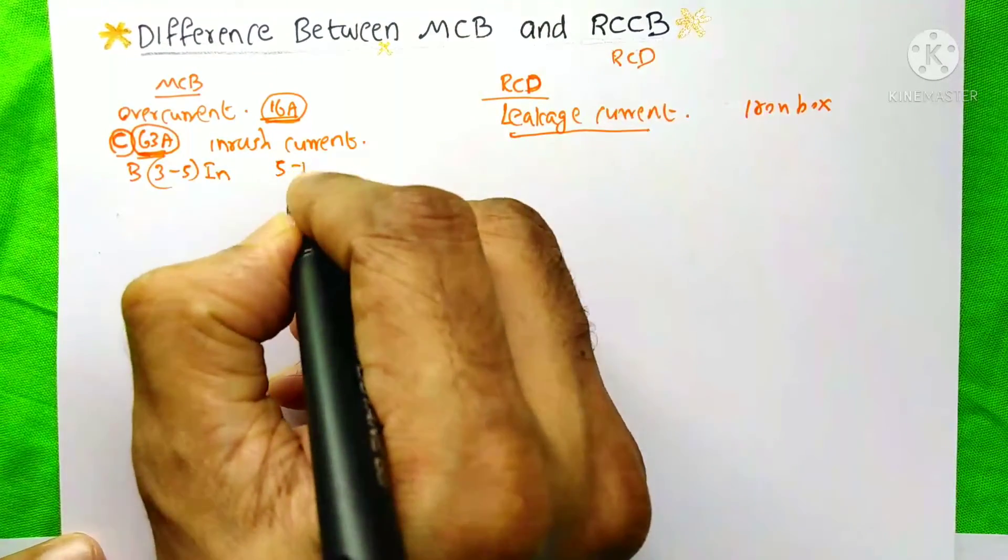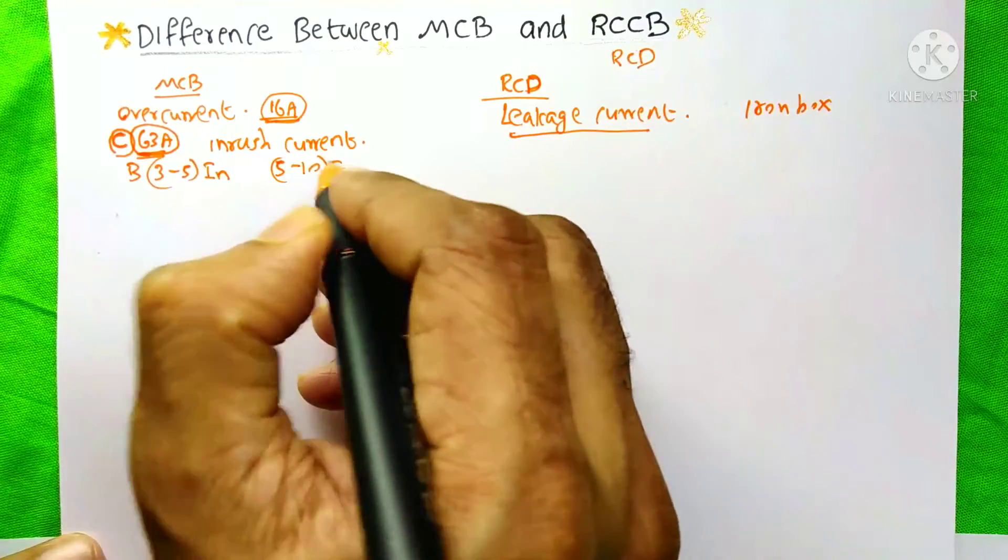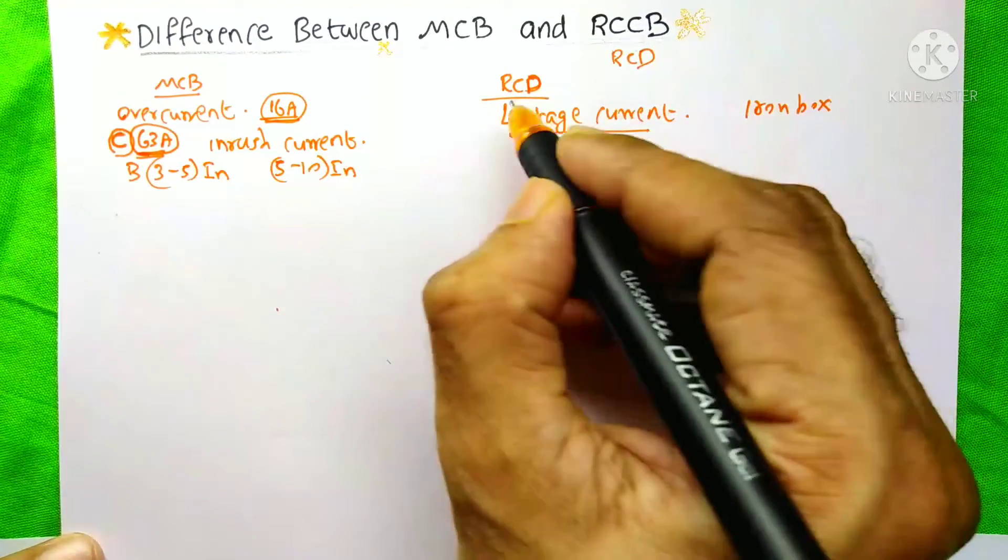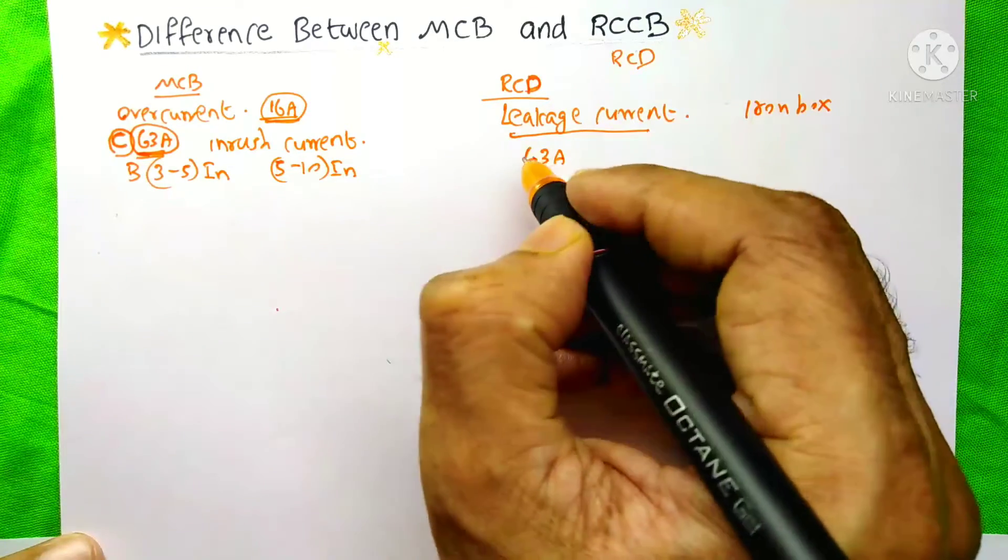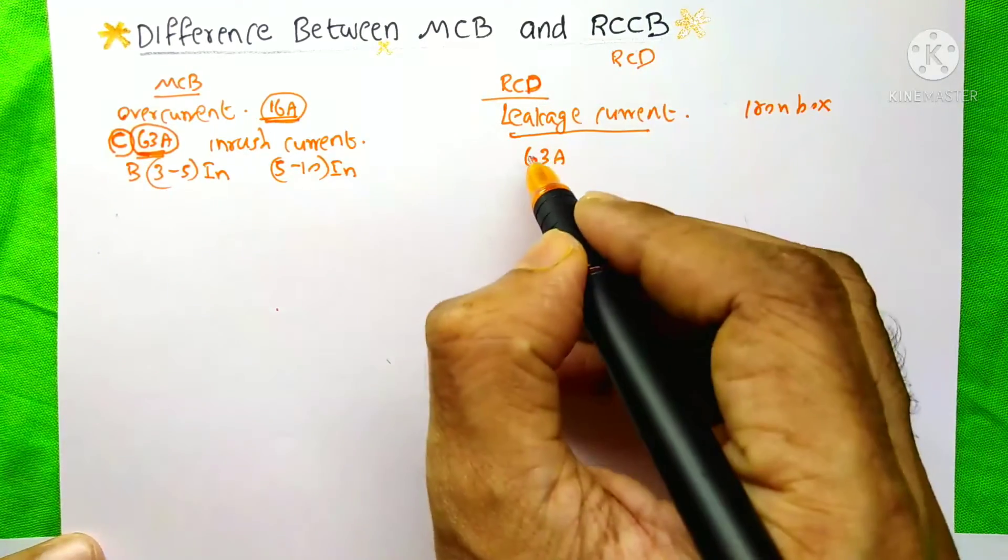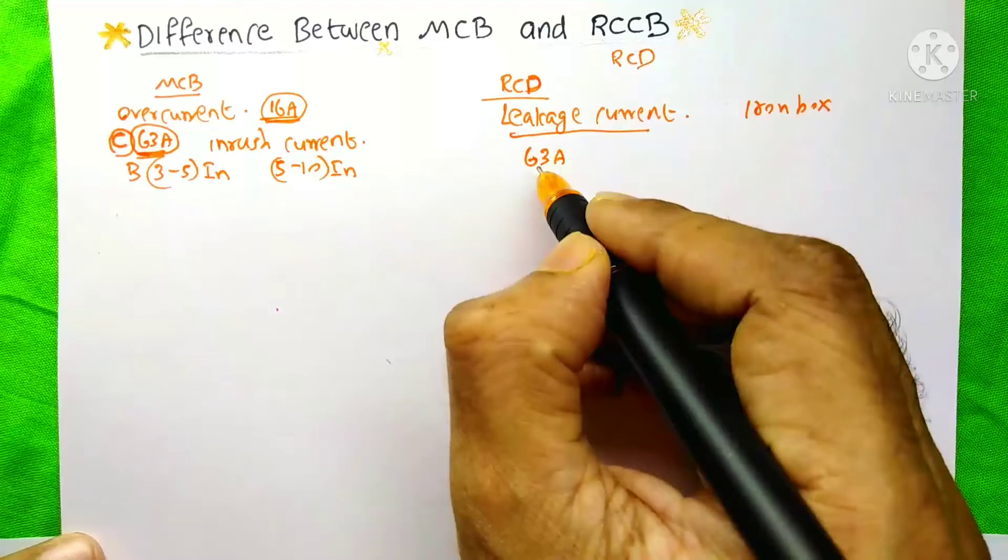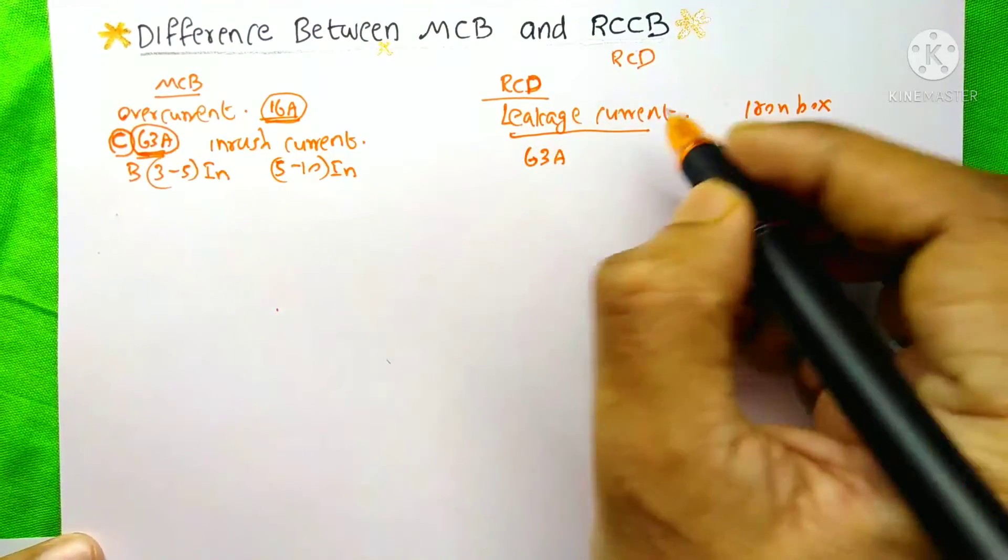But about this RCD, before this 63A, you can't see any of these curves, these alphabets, because it is not operating according to the overcurrent.